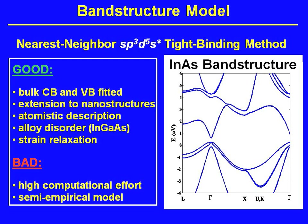We can extend this to nanostructures, and it's really an atomistic description. The downside is it's pretty intensive to compute — high computational effort. Also it's a semi-empirical method, so we don't have a direct link to ab initio calculations for these tight binding parameters.